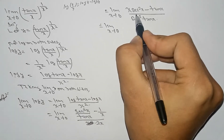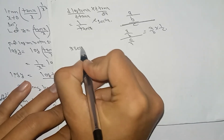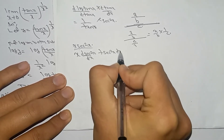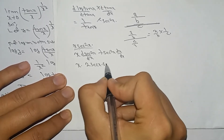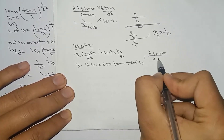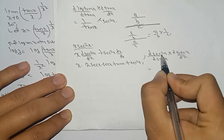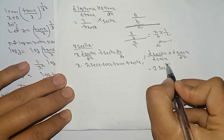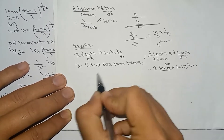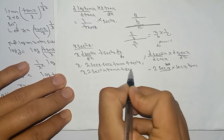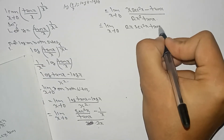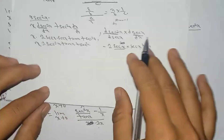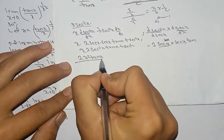Again limit x tends to 0 — we perform the derivative for the numerator. We have two-variable term x·sec²x, so we use the product rule: x · d(sec²x)/dx + sec²x · dx/dx. The derivative of sec²x is 2·sec x · sec x · tan x = 2·sec²x·tan x. So the numerator derivative gives x·2·sec²x·tan x + sec²x. And the derivative of tan x is sec²x.